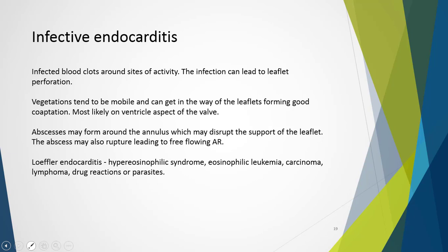Infective endocarditis can be devastating to a valve. Vegetations form as infective blood clots around sites of activity. The infection can lead to leaflet perforation and aortic regurgitation occurring through the body of the leaflet rather than through leaflet tips or along the commissures. Vegetations tend to be mobile and prevent good leaflet coaptation, and are typically seen on the ventricular aspect of the valve. An abscess may form around the annulus, disrupting leaflet support and leading to aortic regurgitation. Worse still, the abscess may rupture first on the aortic side and then the ventricular side, leading to free-flowing aortic regurgitation and further disrupting the support structure of the aortic valve.